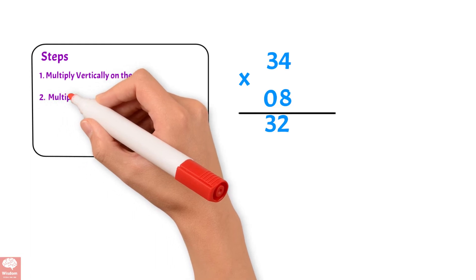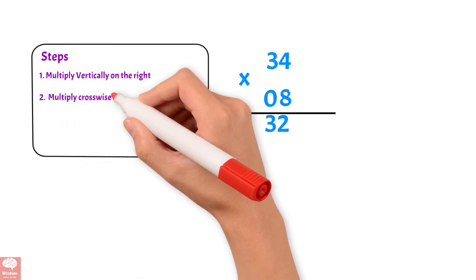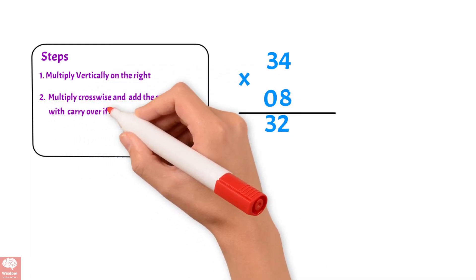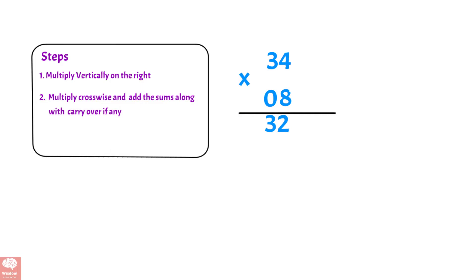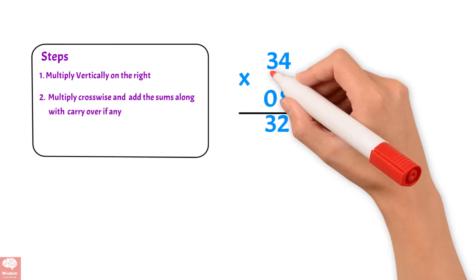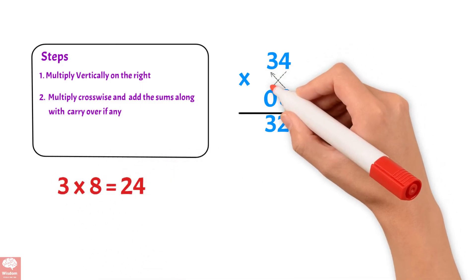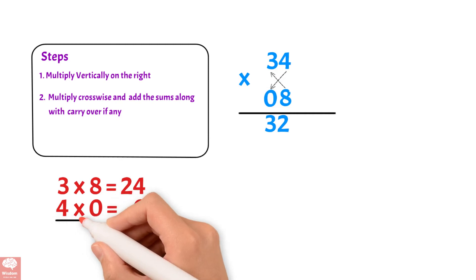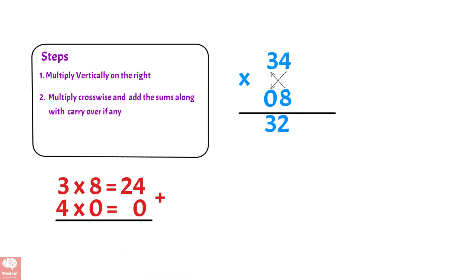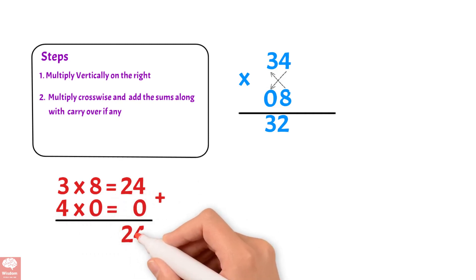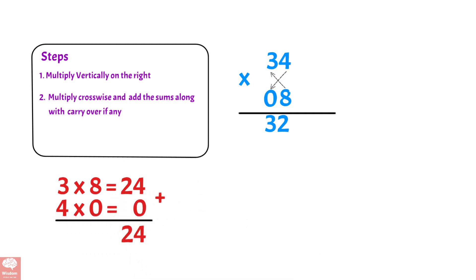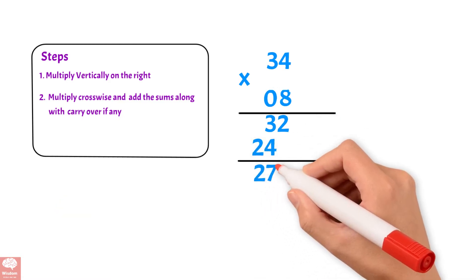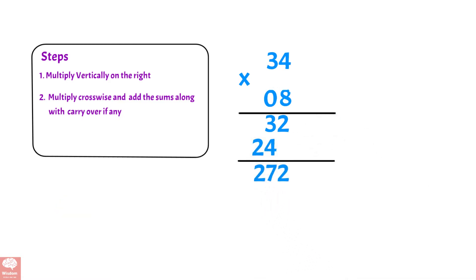Step 2: Multiply crosswise and add the sums along with carryovers if any. 8 times 3, we get 24. 0 times 4, we get 0. If we add 24 plus 0, we get 24. Adding the carryover 3 to 24, we get 272.